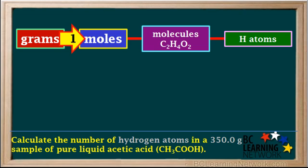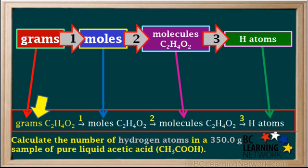In the first step, we convert grams to moles. In the second step, we convert moles to molecules. And in the third step, we calculate the total number of hydrogen atoms. So we create a plan for the three steps and write it down here.